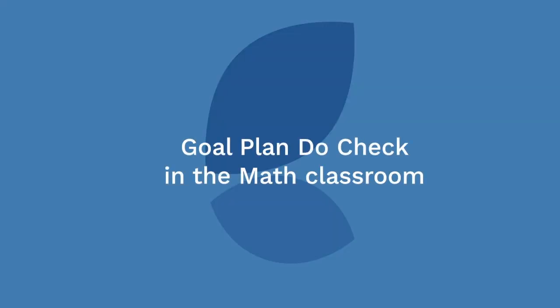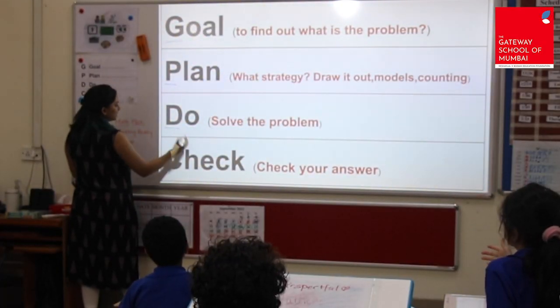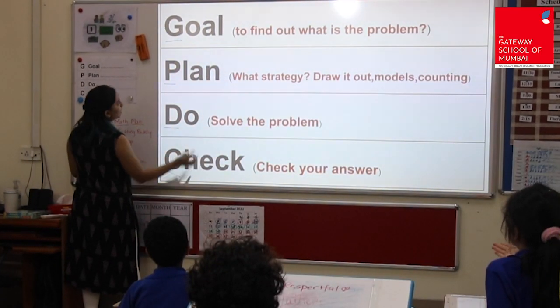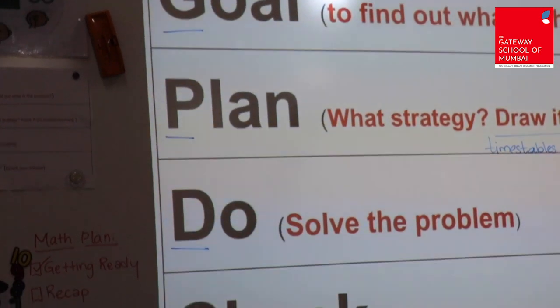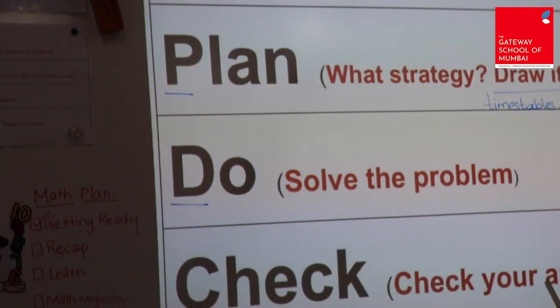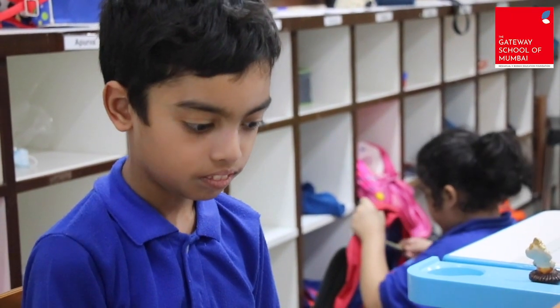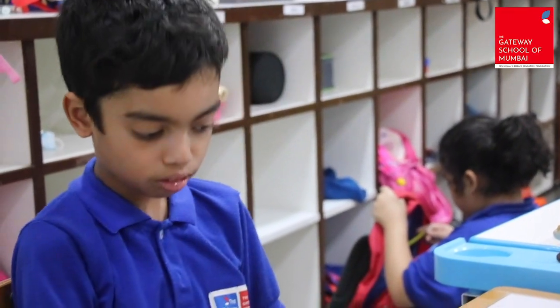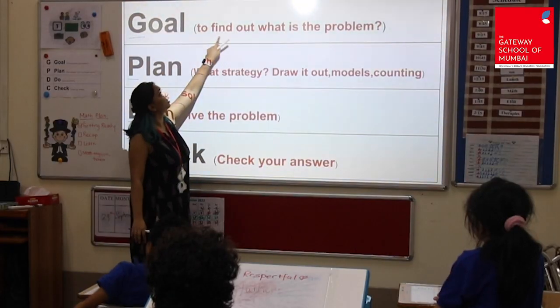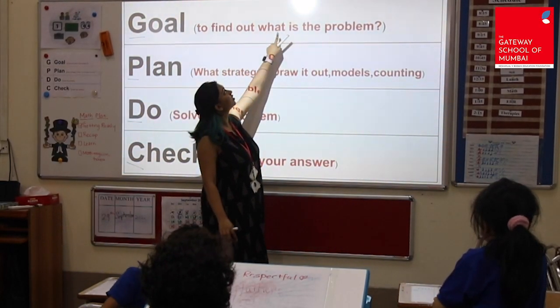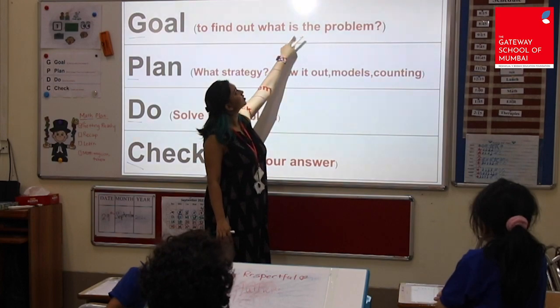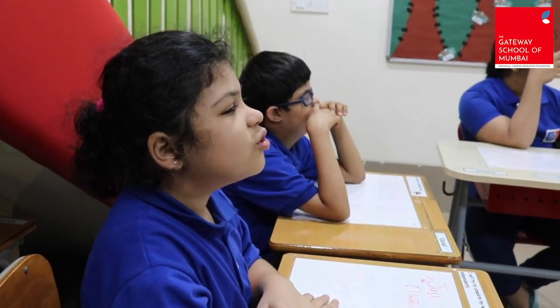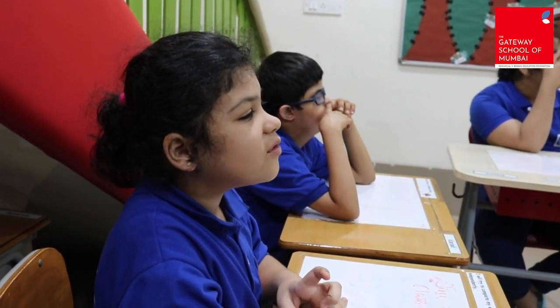Let's take a look at how Goal Plan Do Check can be used in a maths classroom. The four stages of GPDC are Goal, Plan, Do, and Check. The first stage is Goal, where students identify important information and the goal by reading the maths problem.